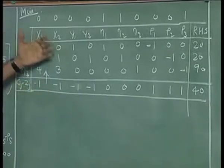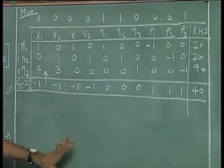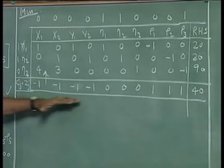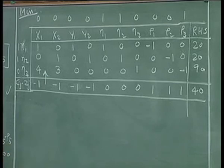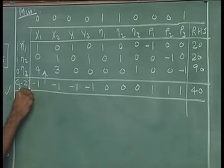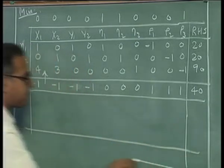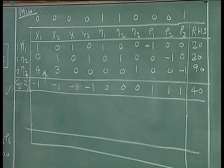For want of time and because of our own familiarity, we will not go through the simplex iteration. We will only give you the optimum table and then see something interesting from the optimum table. The optimum table alone will look like this. This will actually happen after three iterations and you will finally get something like this.